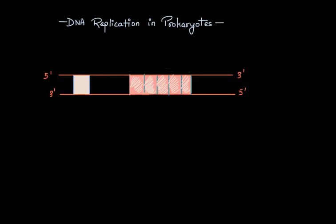The whole replication process of DNA in prokaryotes is divided into three distinct phases: initiation, elongation, and termination.